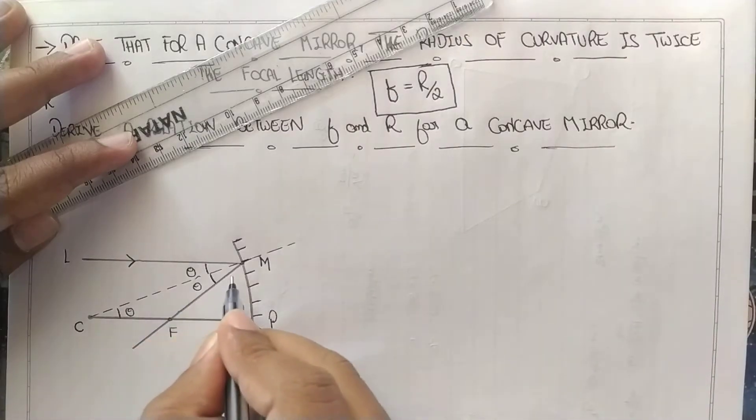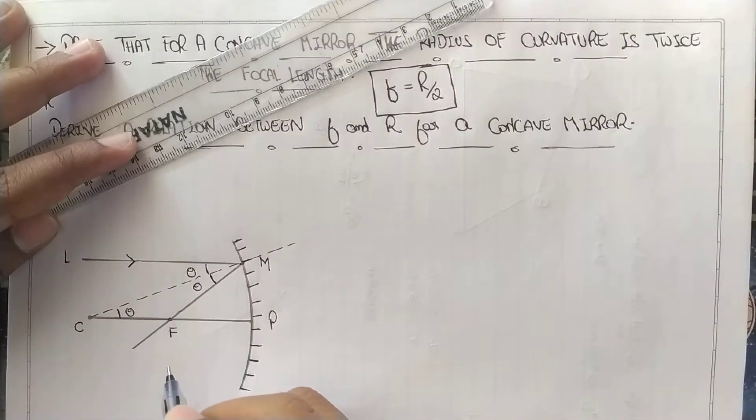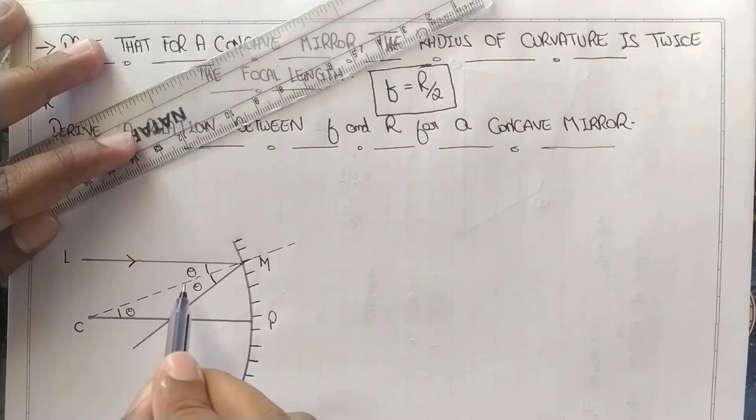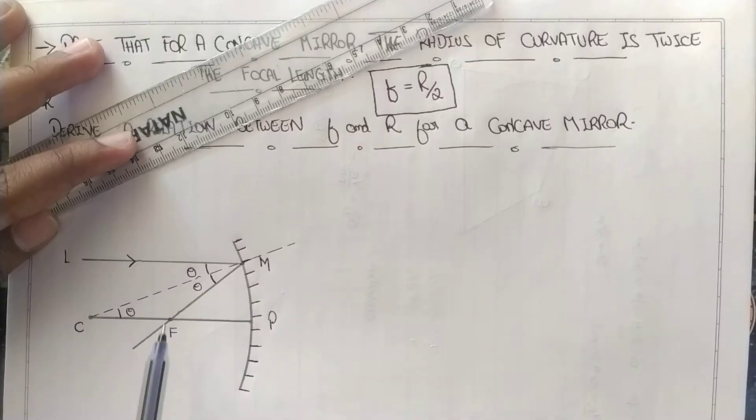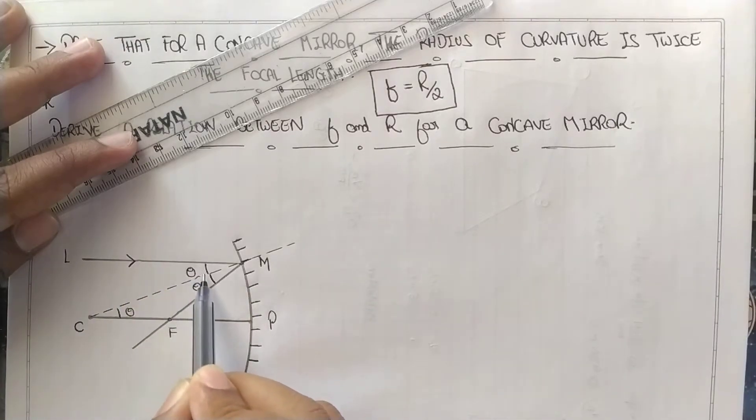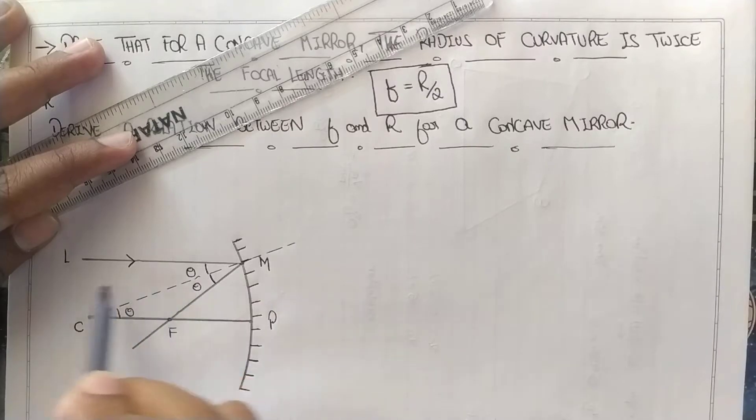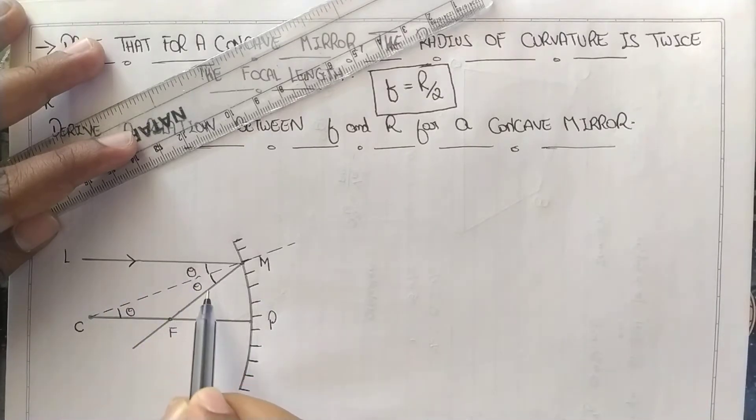Now CMF is also theta. Because of all these angles, we can see that LMF represents two theta - this is one theta, this is another theta. So LMF represents two theta.